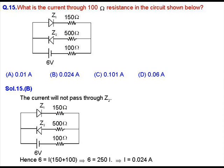We can see that in this circuit a DC battery of 6 volts is connected to two diodes Z₁ and Z₂, which are further connected in series with three resistances: 150Ω, 500Ω, and 100Ω. This 100 ohm resistor's current is what we have to calculate.